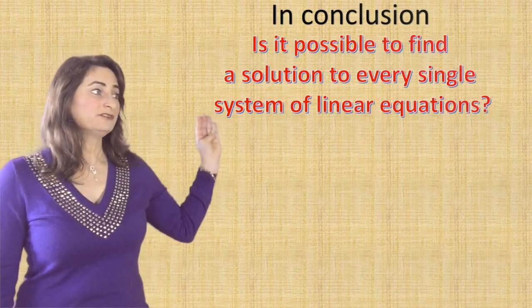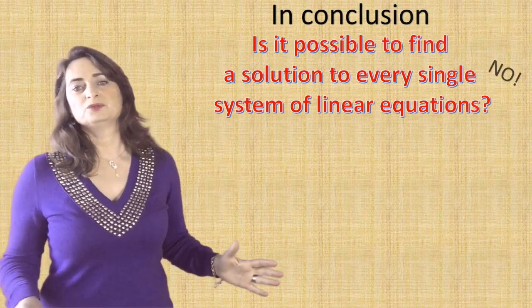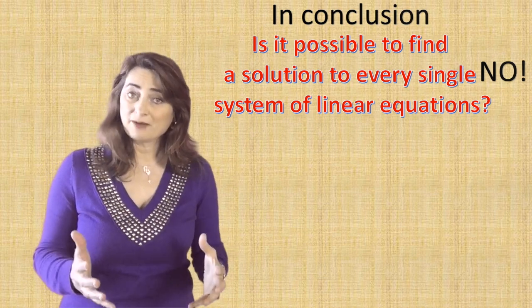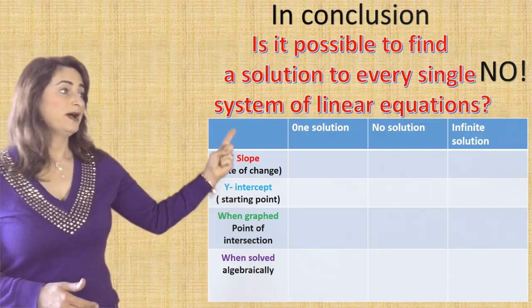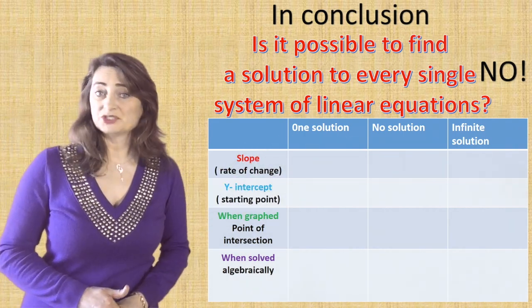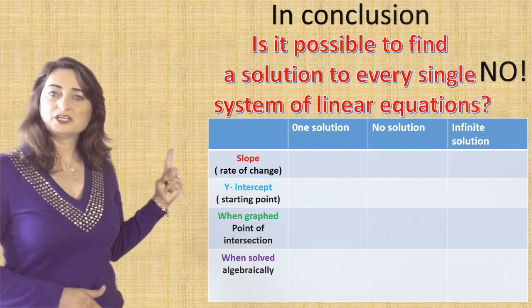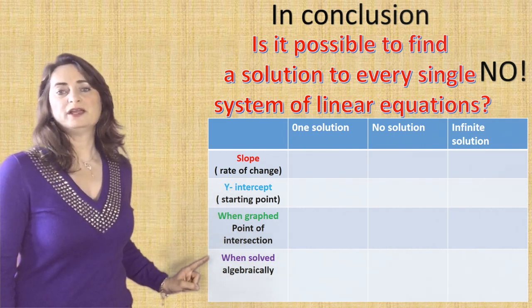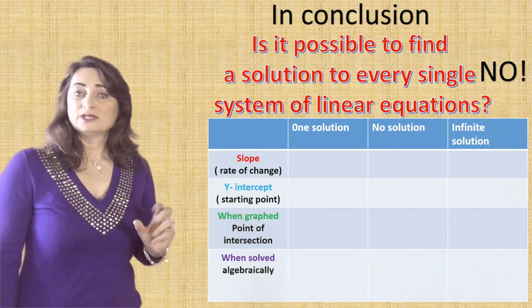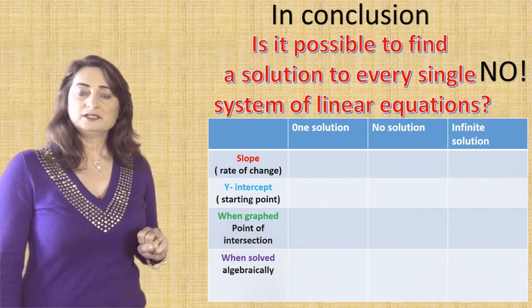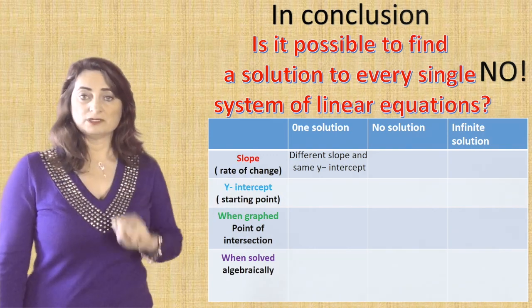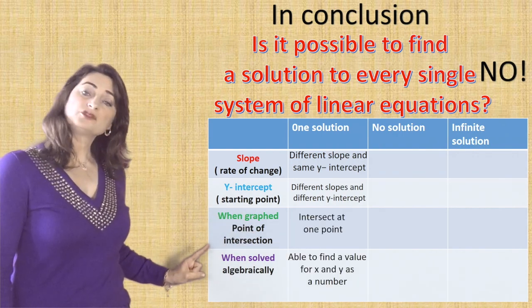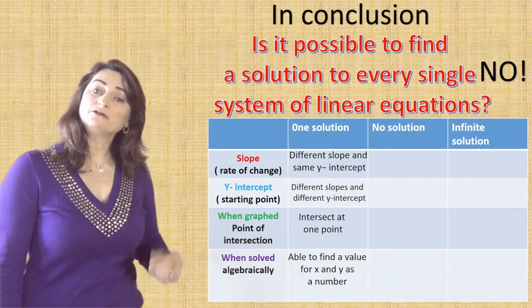In conclusion, is it possible to find a solution to every single system of linear equations? Absolutely not, because there's something called no solution and infinite many solutions. Let's recap everything using a table. The solution type depends on the slope, the y-intercept, whether the lines intersect when graphed, and whether you get a true statement algebraically. For one solution: different slopes with the same or different y-intercepts — the lines intersect at one point, and you can find specific values for x and y.